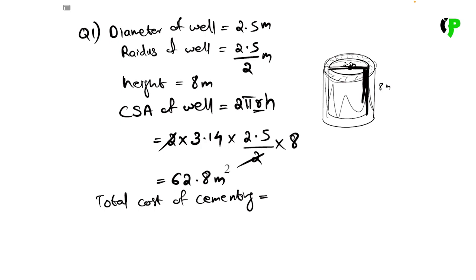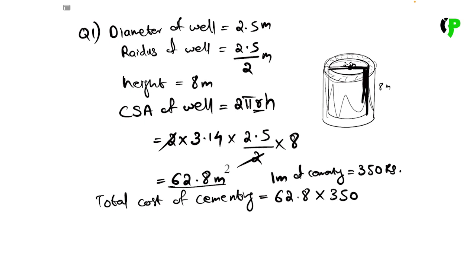1 square meter of cementing is equal to 350 rupees. So total cost of cementing is equal to 350 rupees times the curved surface area. Okay, this is the first question. I will do the second question and third question in the video. Thank you.